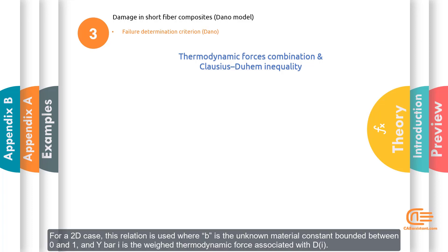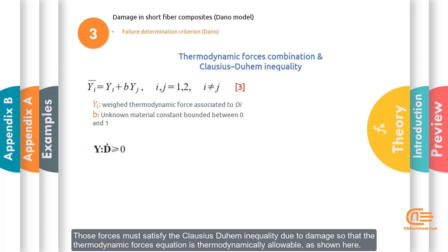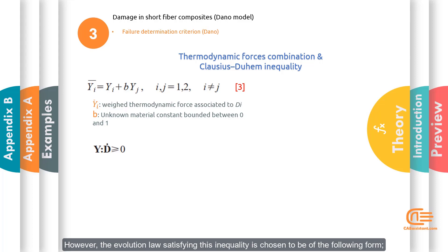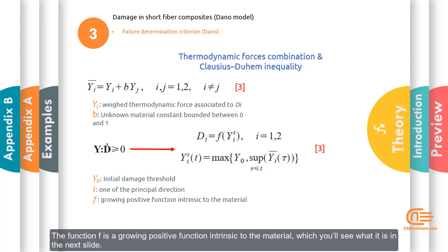For a 2D case, this relation is used where B is the unknown material constant bounded between 0 and 1 and Y-bar-i is the weighted thermodynamic forces associated with Di. The thermodynamic forces drive the evolution of the internal variable characterizing the damage up to failure. Those forces must satisfy the Clausius-Duhem inequality due to damage so that the thermodynamic forces equation is thermodynamically allowable. However, the evolution law satisfying this inequality is chosen to be of the following form, where Y0 is the initial damage threshold and i is one of the principal directions.